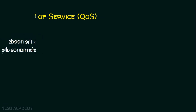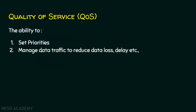Now we shall see the third basic characteristic of computer networks: quality of service. It is the ability to set priorities and manage data traffic to reduce data loss and delays. For example, if a router receives two packets at a time, the router should know which data to process first. This is what we call setting priorities.